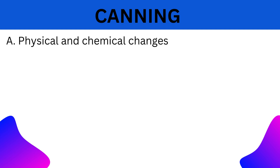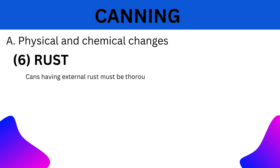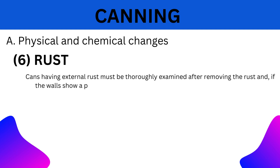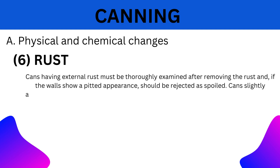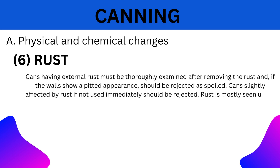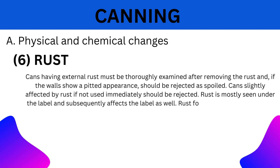6. Rust: Cans having external rust must be thoroughly examined. After removing the rust, if the walls show a pitted appearance, they should be rejected as spoiled. Cans slightly affected by rust, if not used immediately, should be rejected. Rust is mostly seen under the label and subsequently affects the label as well.